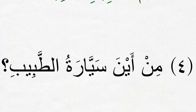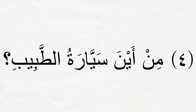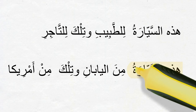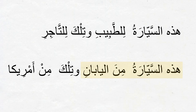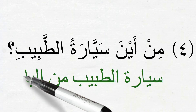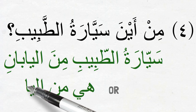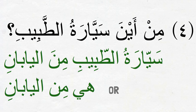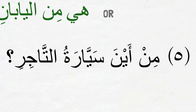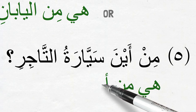Question four: من أين سيارة الطبيب — where is the doctor's car from? We find the answer in the text: هذه السيارة من اليابان, referring to the doctor's car. So we answer: سيارة الطبيب من اليابان, or if we want to use ضمير instead, we simply say هي من اليابان — it is from Japan. Question five: من أين سيارة التاجر — where is the trader's car from? It was from America, so we write: هي من أمريكا.